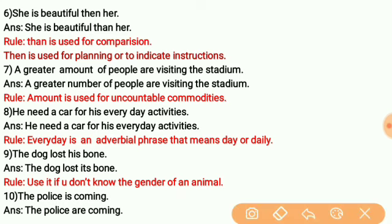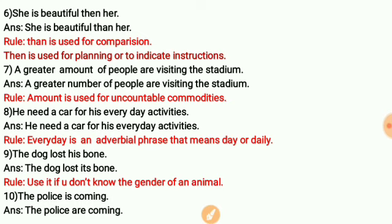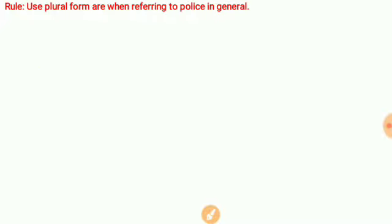'The police is coming' — this is incorrect. The correct form is 'The police are coming.' Police as a collective noun referring to the force in general takes a plural verb. If you refer to an individual officer, say 'this policeman.' But when referring to the police as a group, use the plural form.